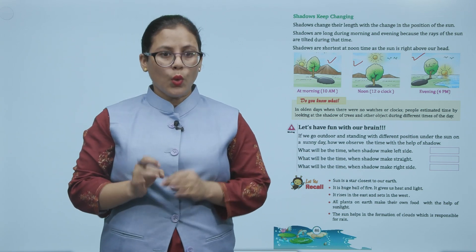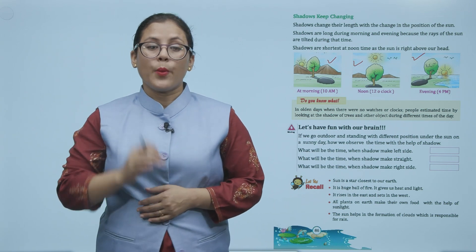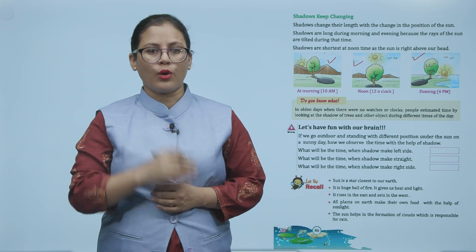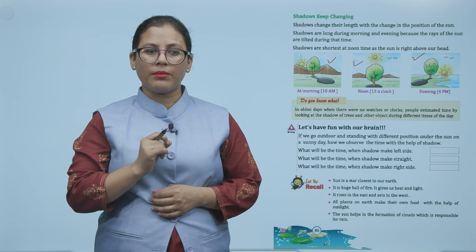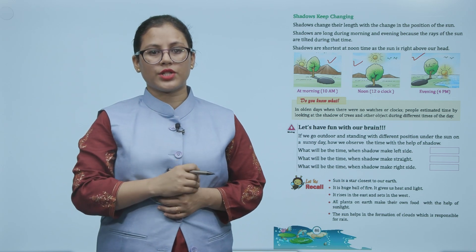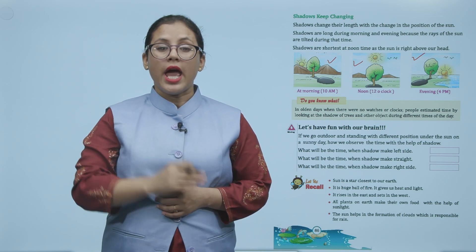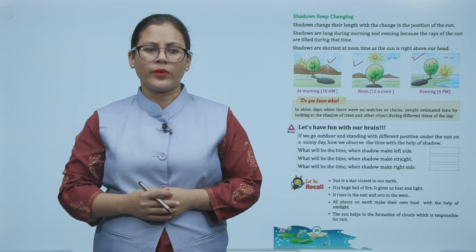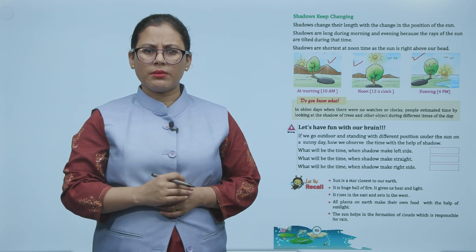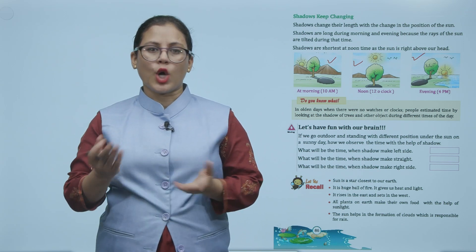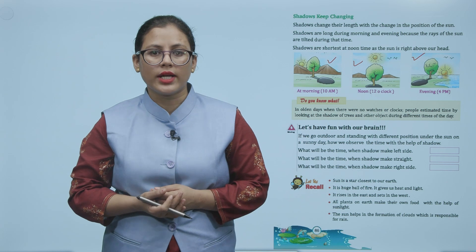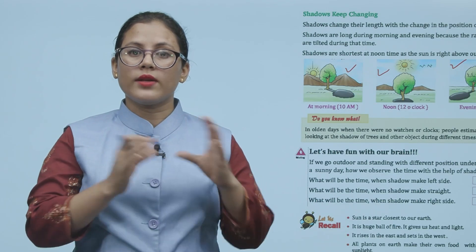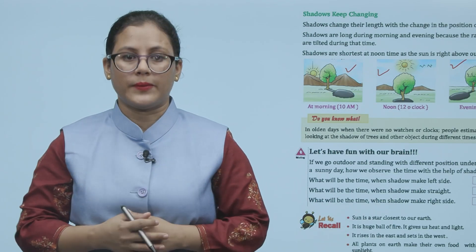Do you know, in olden days, when there were no watches or clocks, people estimated time by looking at the shadow of trees and other objects during different times of the day. In olden days, when there were no watches or clocks, people kya karte the? In shadows ko dekh ke estimate karte the ki kaunsa time chal raha hai.